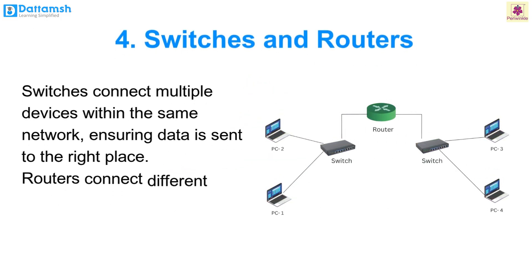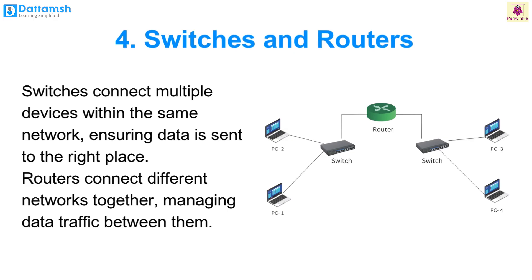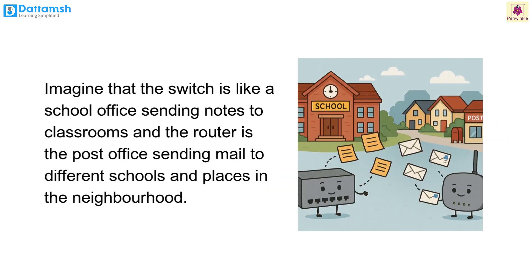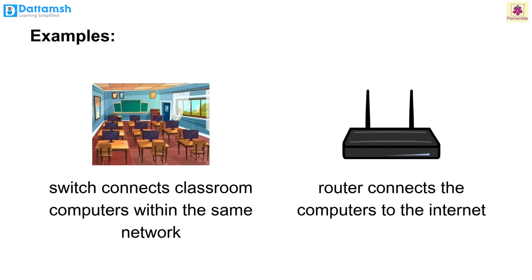Switches and routers. Switches connect multiple devices within the same network, ensuring data is sent to the right place. Routers connect different networks together, managing data traffic between them. Imagine a switch is like a school office sending notes to classrooms, and a router is like a post office sending mail to different schools. Example: a switch in school connects classroom computers within the same network, and a router connects the school computers to the internet.